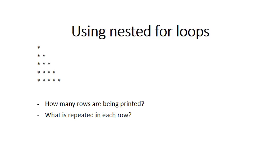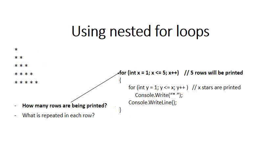In this video we'll be looking at interesting creative ways of using nested for loops. Let's start with this diagram that you want to print. The two questions you need to ask in these kinds of problems are: how many rows are being printed, and what is repeated in each row? We can see there are five rows, and in each row asterisks are repeatedly printed. The outer for loop goes from one to five, meaning we will be printing five rows.